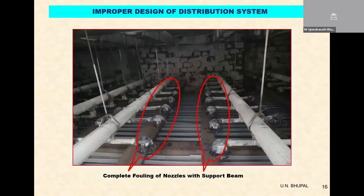This is one location where the distribution system is designed very badly. You see that most of the nozzles are overlaid with the beam — so whatever spray comes out of these nozzles will directly hit the beam. The fill below will not receive water in the portion where the beam exists.